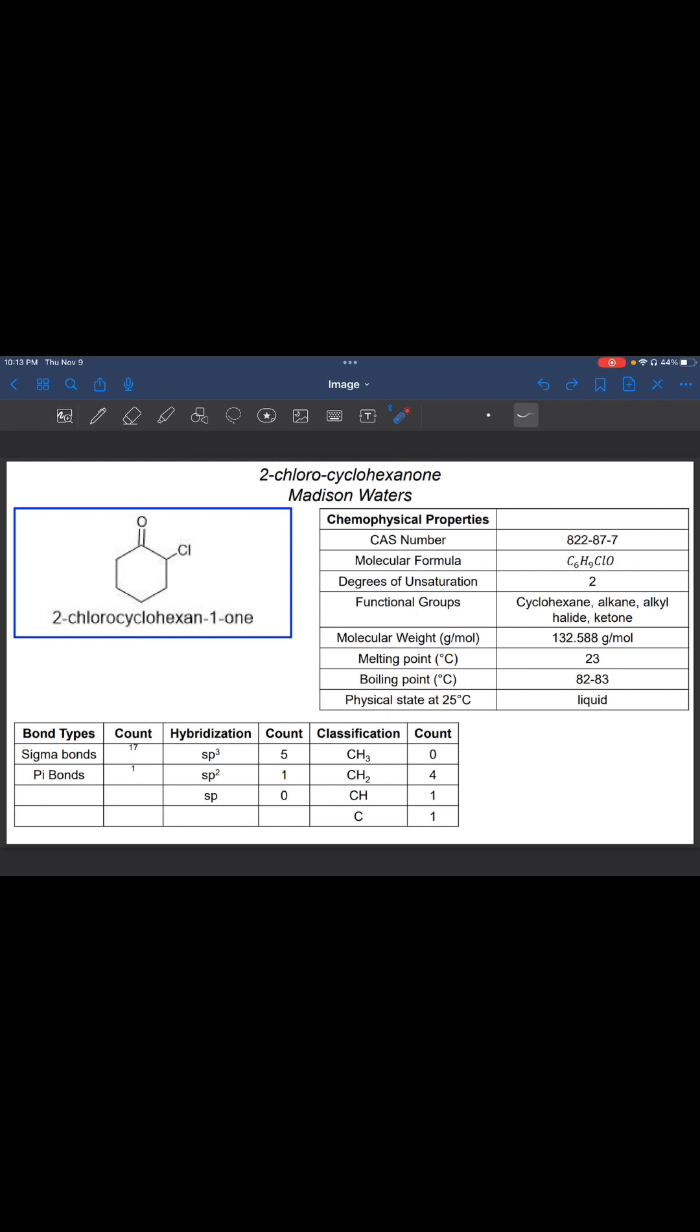The functional groups we have here are cyclohexane. That is this big ring right here. Then we also have alkanes. Those are these carbon-carbon single bonds that you're seeing in that ring.